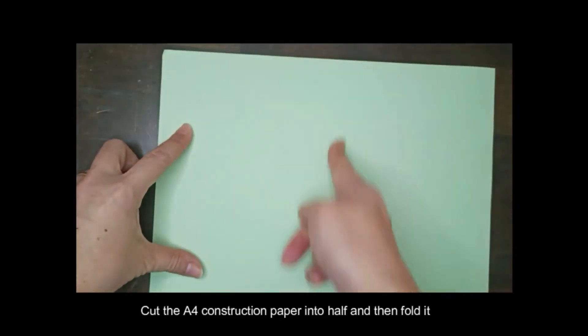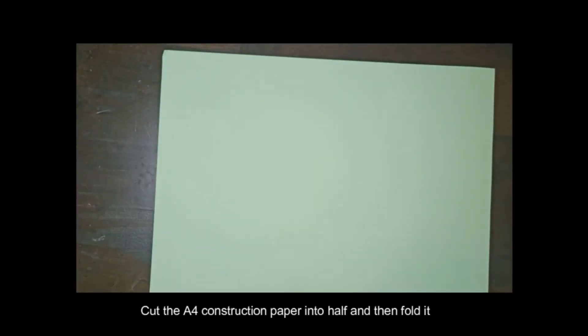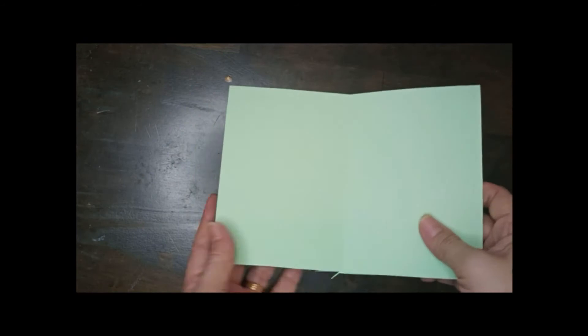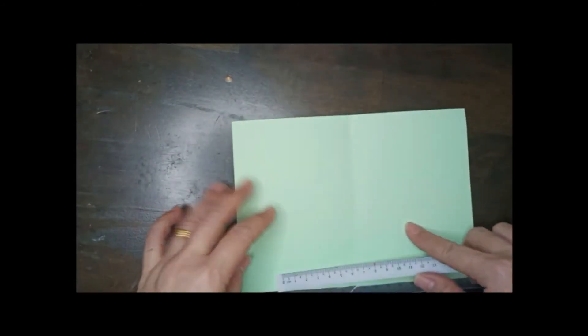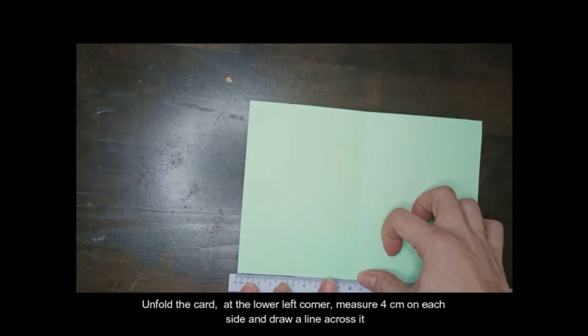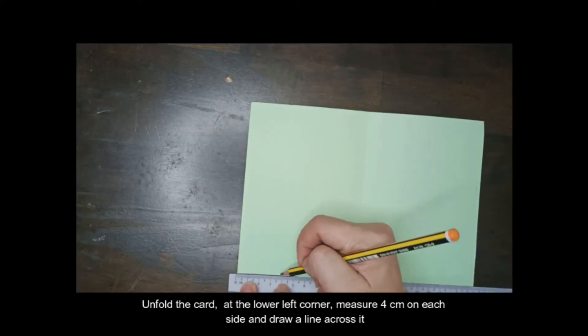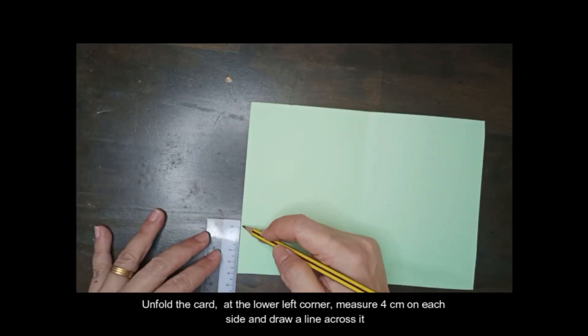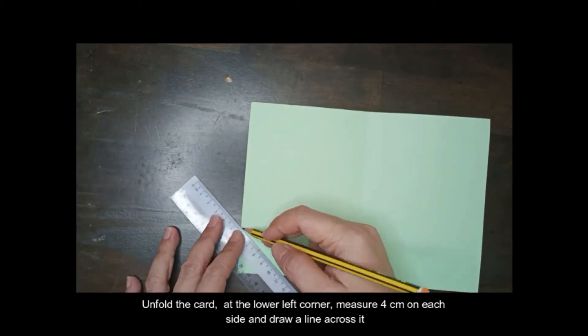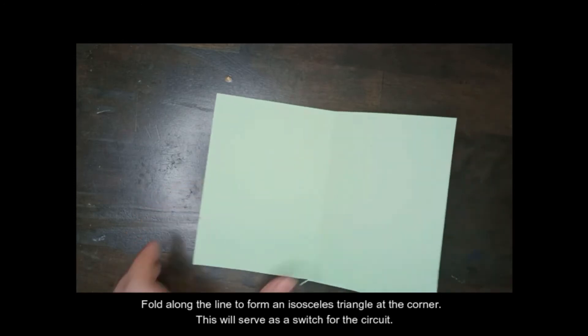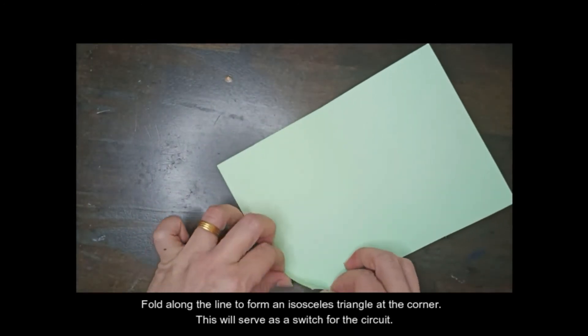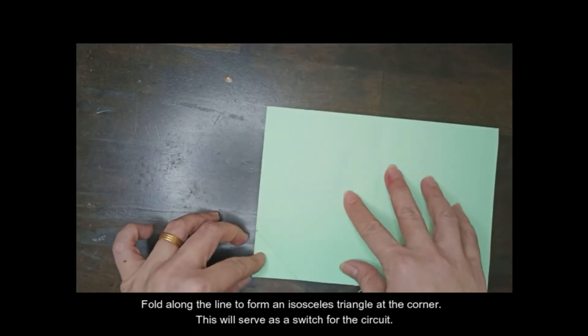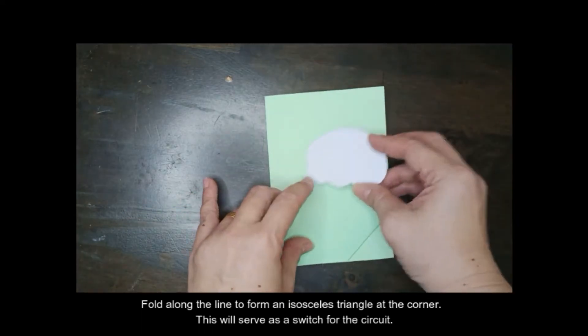Cut the A4 construction paper into half and then fold it. Unfold the card and at the lower left corner, measure 4cm on each side and draw a line across it. Fold along the line to form an isosceles triangle at the corner. This will serve as a switch for the circuit.